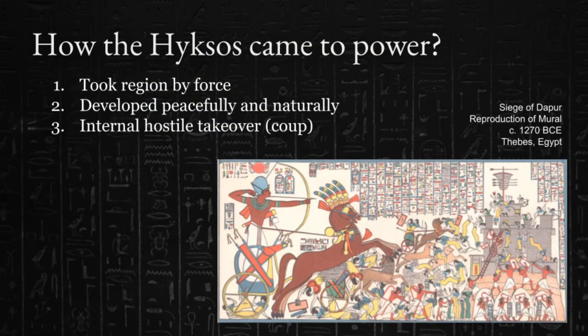Records suggest that Egyptians and Levantines were in contact for all of Egypt's history, and recent digs show that people from the Levant had lived in Avaris for over 150 years before the Hyksos came into power. Scholars have debated for decades over the specifics of how the Hyksos came to power in Avaris, and have whittled it down to about three main possibilities: one, that the Hyksos invaded Egypt and took the region by force; two, that the Hyksos developed peacefully from the growing Levantine resident population; or three, that the growing Levantine population enacted a hostile takeover within Avaris.